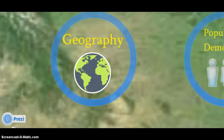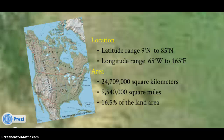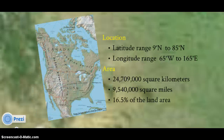A little about geography. North America is located at latitude range 9 north to 85 north, longitude range 65 west to 165 east. The area encompasses nearly 25 million square kilometers, which accounts for roughly 16.5% of the world's land area.